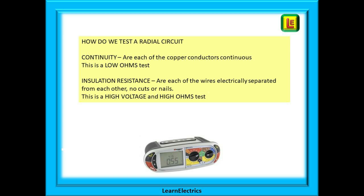Next we carry out an insulation resistance test: are each of the wires electrically separated from each other? Are there no cuts or nails in the plastic insulation around the copper that will allow electric current to leak from one conductor to another? This is a high voltage and high ohms test. We will be testing at 500 volts and expecting our test meter to display results in the order of mega ohms — in other words millions of ohms. High resistance test results like this will show that the PVC insulation is doing its job, insulating the copper conductors from one another.